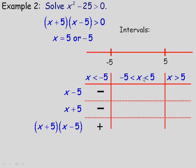Between negative 5 and 5, choose the test number 1. Substituting into x minus 5: 1 minus 5 is negative 4, so that factor is negative. Substituting into x plus 5: 1 plus 5 is positive, so that factor is positive. The product of a negative and a positive is negative, so we record negative for this middle interval.